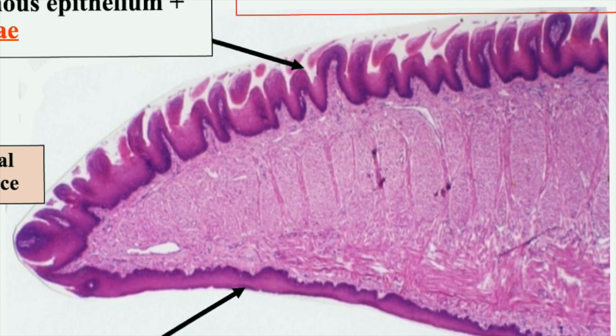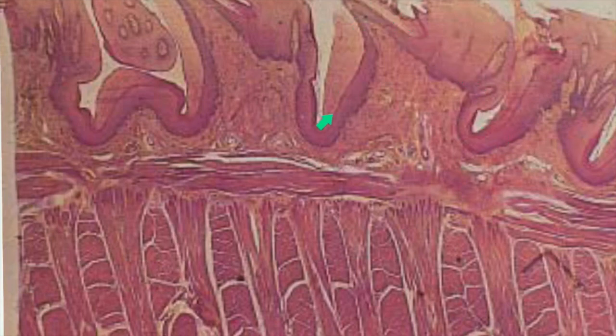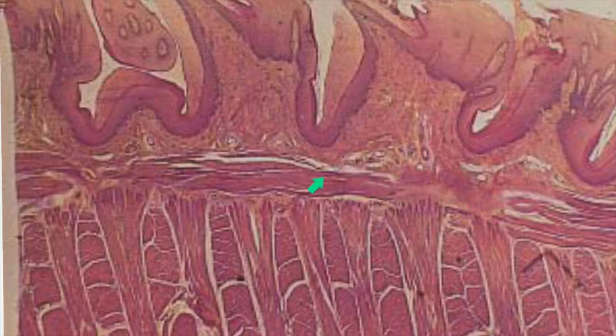This is a section in the tongue, which is present inside the oral cavity and is characterized by a dorsal surface and a ventral surface. The dorsal surface shows projections called papillae, formed of epithelium overlying connective tissue — these are the filiform papillae, which are conical in shape. The most important structure is the skeletal muscle, present in three perpendicular directions: longitudinal, transverse, and vertical.